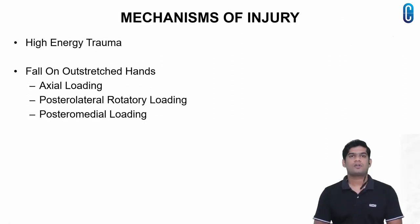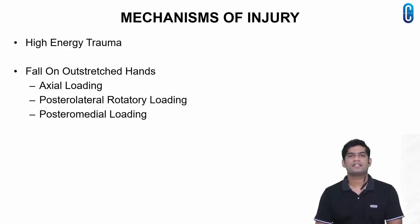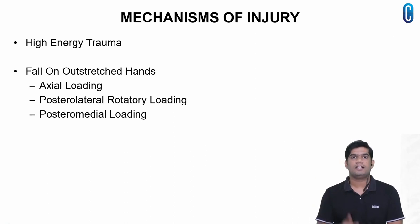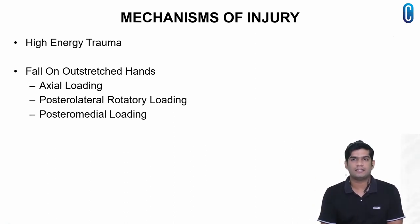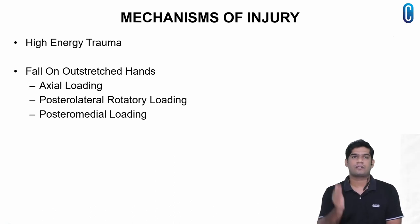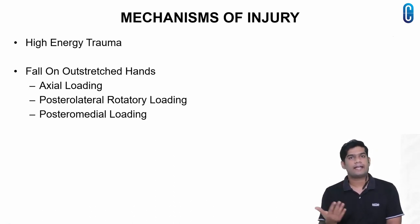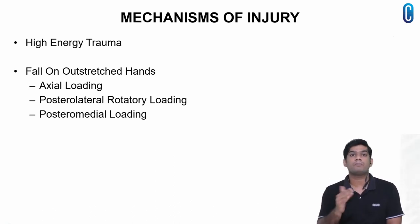Coronoid fracture is usually the result of a high energy trauma. The patient presents with a history of fall on outstretched hands with loading force either on axial loading, posterolateral rotatory loading, or a posteromedial loading.